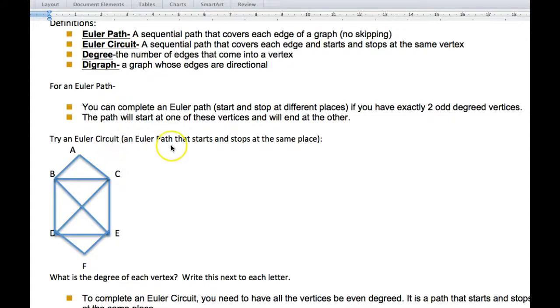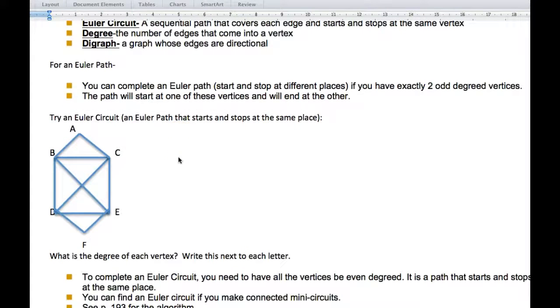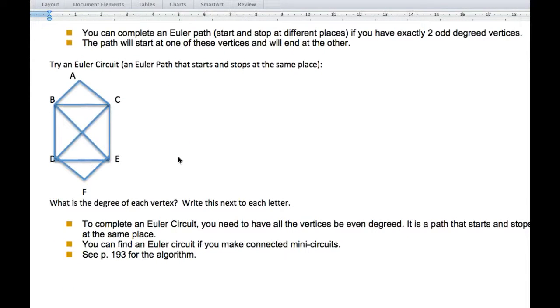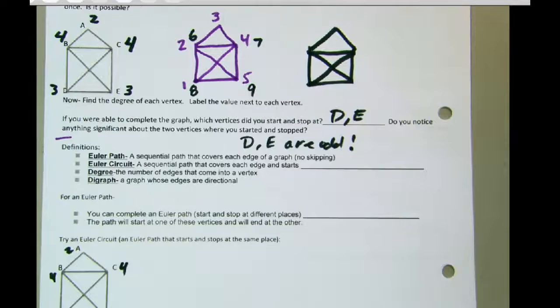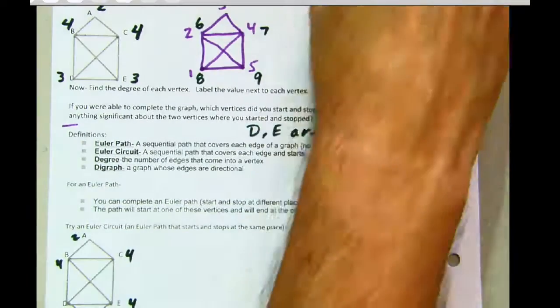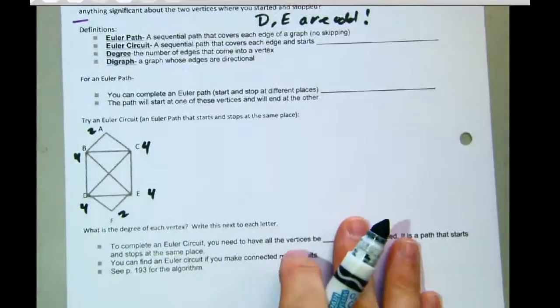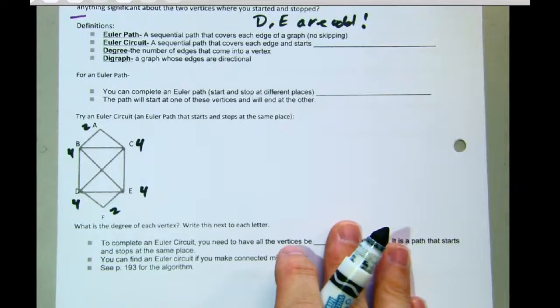Now, see if you can do an Euler circuit on this one, where you start and stop at the same place. Pause this, and give it a go. Did you try it? I hope so. Okay, so what happens now is that if I label the degree of these vertices, I'm going to have all even. When I have all even, then I'm going to be able to do the Euler circuit.